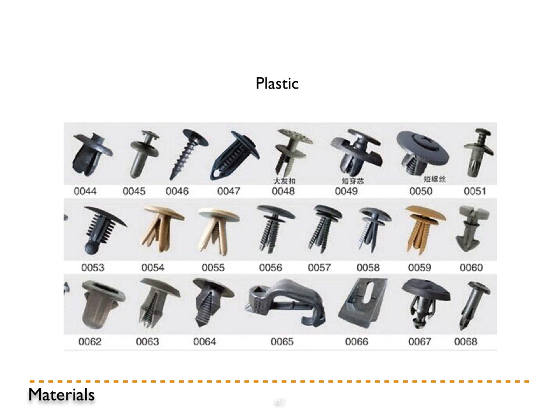Plastic fasteners are found in abundance in any car interior, holding on upholstered trim or pieces of the dashboard. They are very light and cheap to make, mostly designed to ease assembly of the vehicle and to hold strongly enough so they won't come apart during normal use.